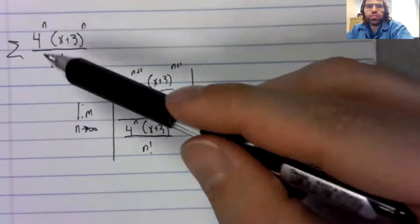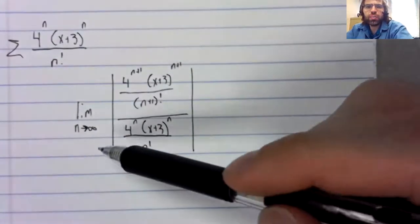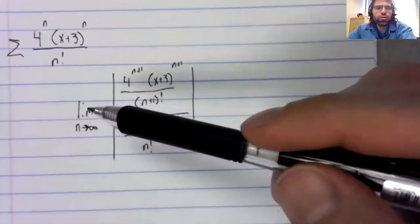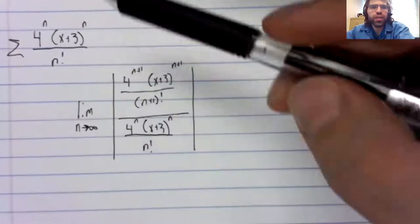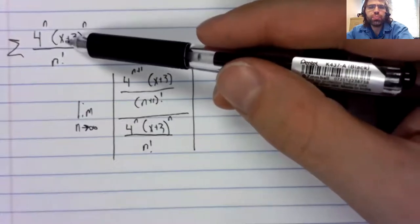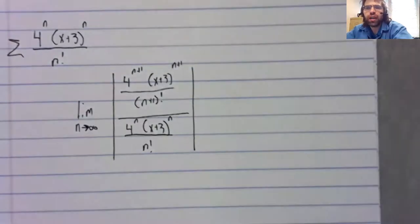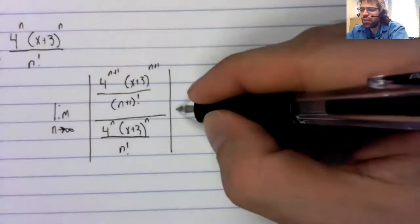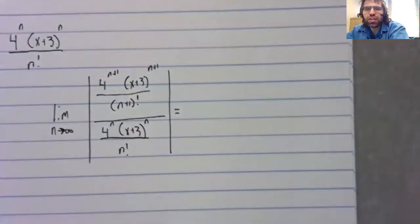The convergence or divergence depends on whether this limit is greater than one. And because we've got this variable X, it might be that for some values of X, the limit is greater than one, and for other values, it's less than one.